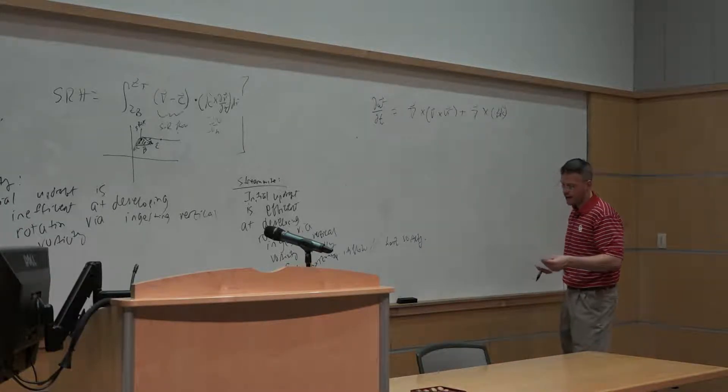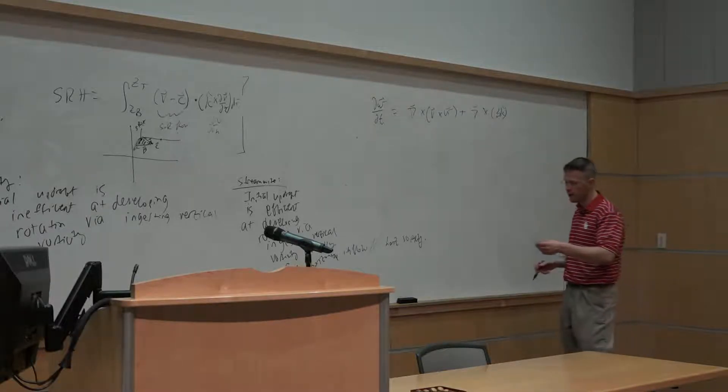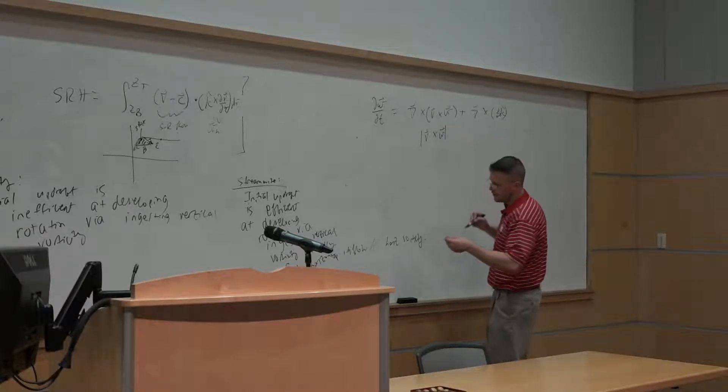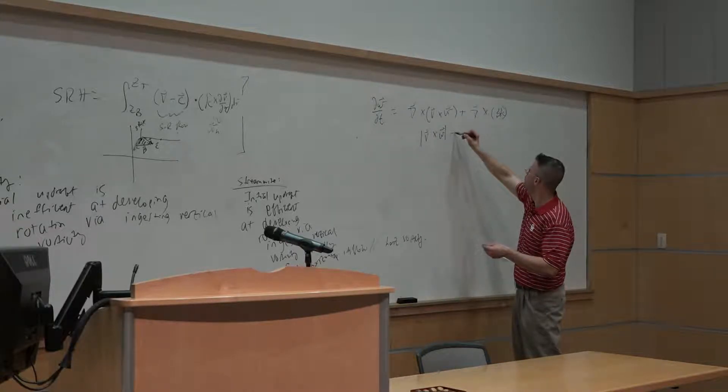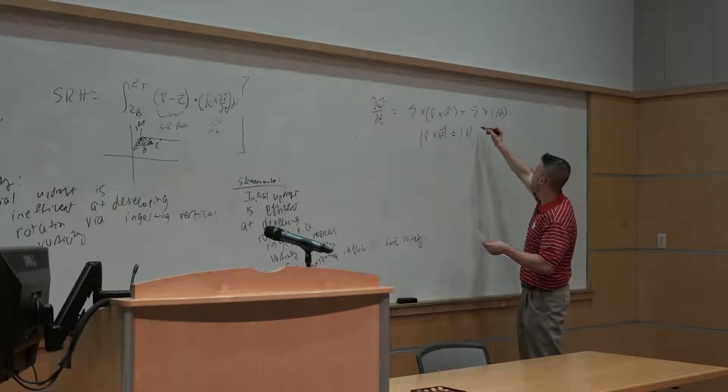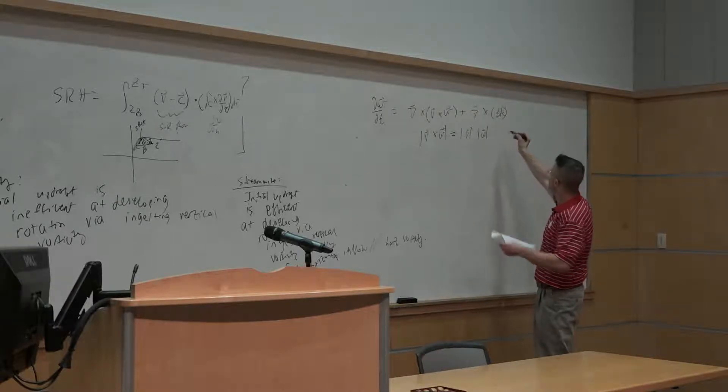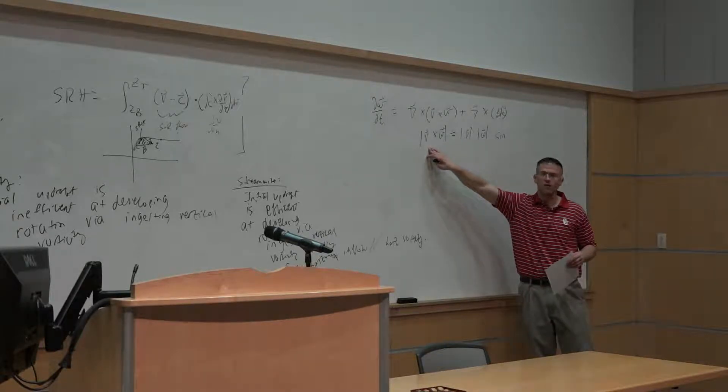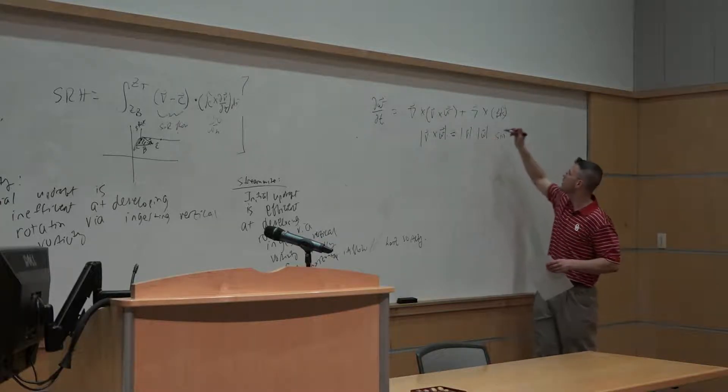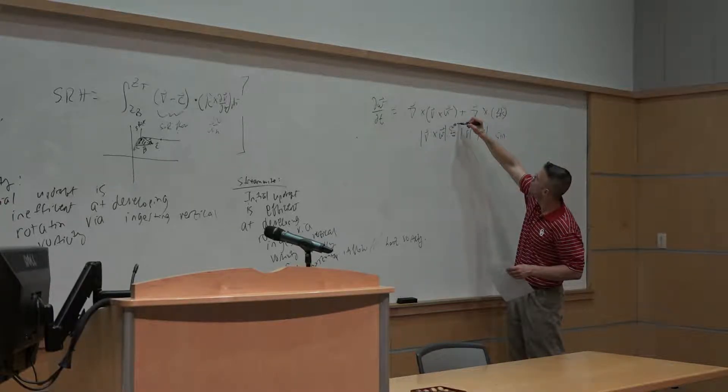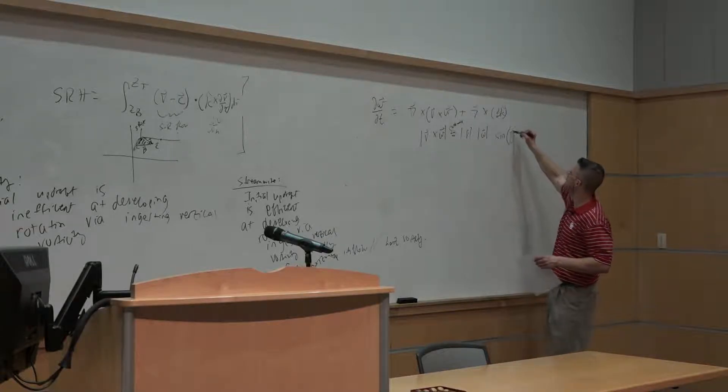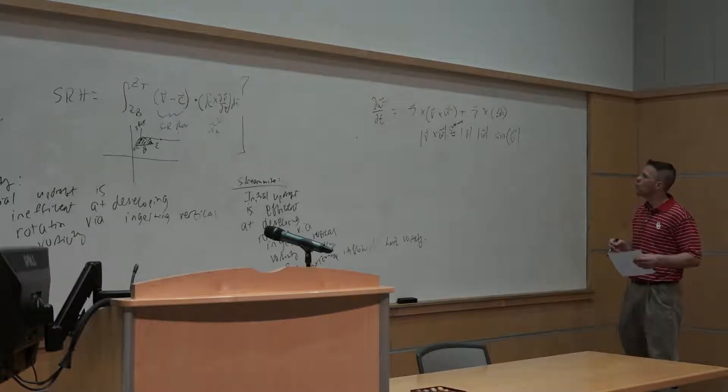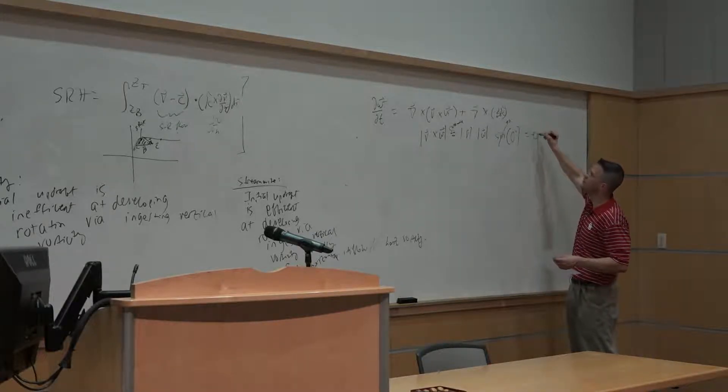And if we were to have the case where our vorticity is purely streamwise, then the magnitude of v cross omega is going to equal the magnitude of v times the magnitude of omega times the sine of the angle between, in this case, our storm relative flow and omega. For the case of streamwise vorticity, this is zero degrees. Again, our horizontal vorticity is going to be parallel to our horizontal inflow. Sine of zero degrees is zero, this is equal to zero.